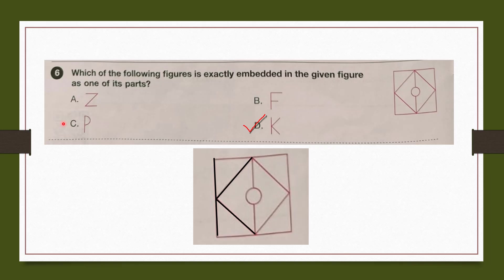Question number 6: Which of the following figures is exactly embedded in the given figure as one of its parts? If you see here, we can find K. K is exactly embedded in the figure. So our answer is option D, K.